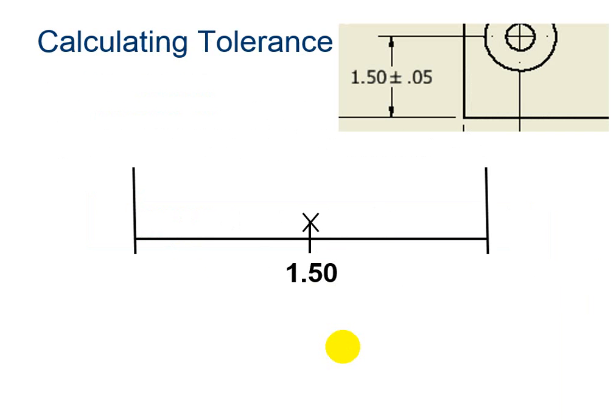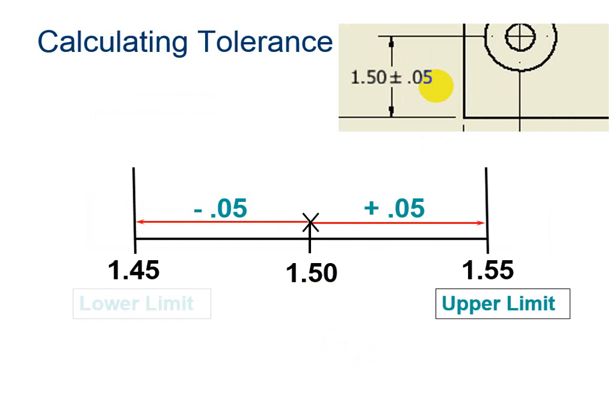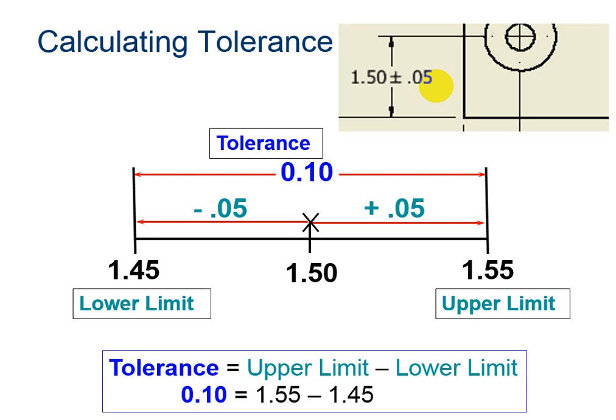Let's learn to calculate tolerance when I'm given a bilateral dimension. So I have 5 hundredths for the upper limit, and I have 5 hundredths for the lower limit. So overall, my tolerance is 1 tenth.